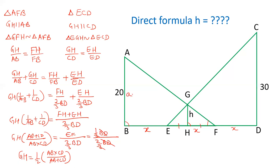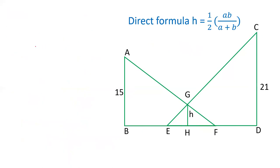GH will be equal to one-half AB into CD upon AB plus CD. So if I take this value as A, this value as B, and this is H, then H will be the direct formula: one-half A into B upon A plus B. This formula is done.